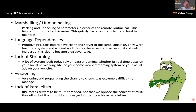Fourth drawback: versioning. If different clients have different versions of a service, it becomes really hard to manage which client has been served which version of your code. Fifth: lack of parallelism. RPC forces the server to be multi-threaded — not that multi-threading is opposed, but it was an imposed design requirement to achieve parallelism. It was not supported by default; you had to know how to make your server code multi-threaded.